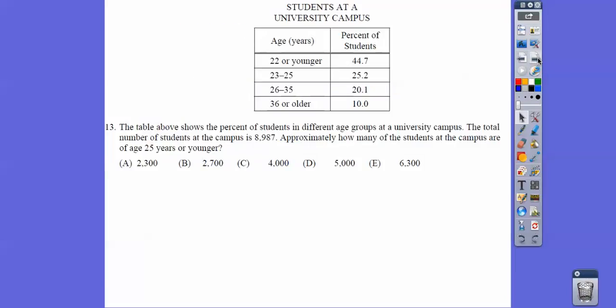All right, here the table above shows the percent of students in different age groups at a university campus. The total number of students at the campus is 8,987. Approximately - the key word is approximately - so I'm going to automatically round this to 9,000. How many students at the campus are 25 years or younger? I'm going to round this to 25%. I'm going to round this to 45%. When I round those guys, that rounds to 70%. This rounds to 9,000.